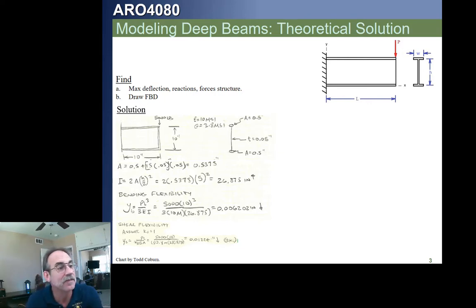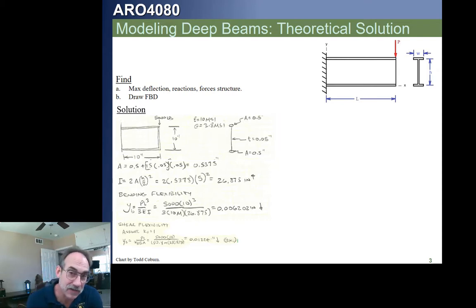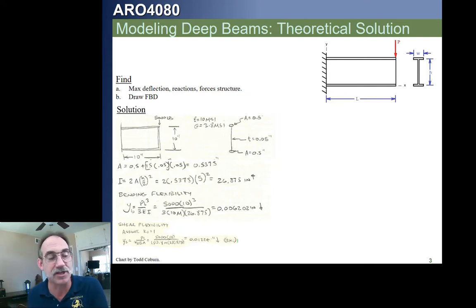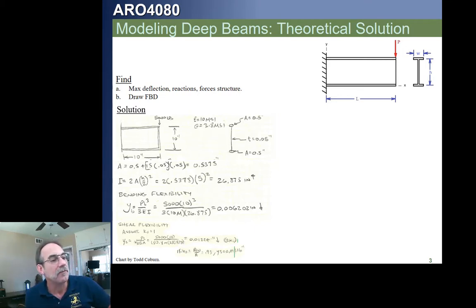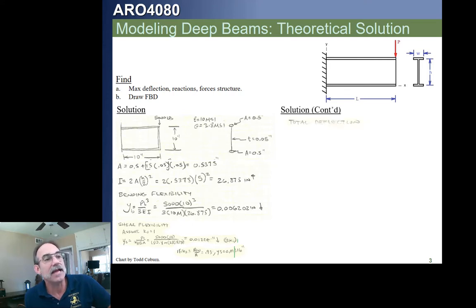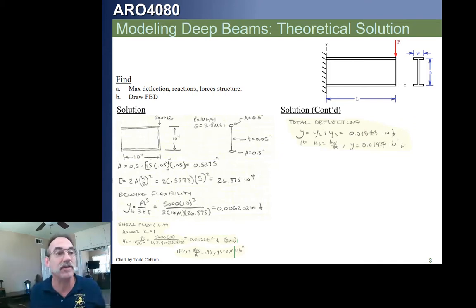What this implies is that the deflection most folks would calculate — ignoring shear deflection — completely misses the boat for a deep beam like this, when a beam is about as deep as it is wide. The total deflection would be adding your bending deflection and your shear deflection together.